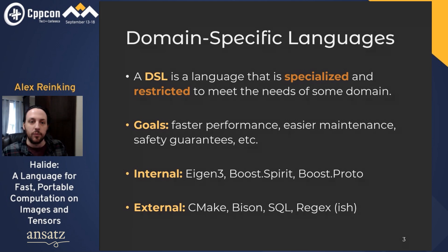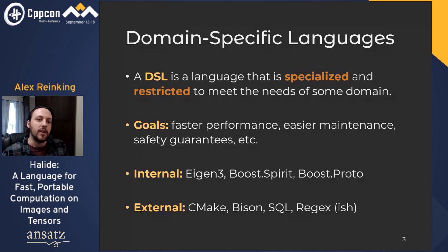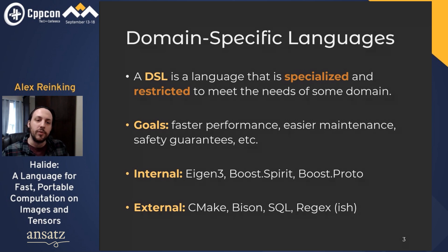It's nicer and more portable to write CMake than raw shell scripts and batch files. It's also more efficient to use a well-engineered parser generator than to read textbooks and write parsing tables yourself. In the programming languages world, we draw a distinction between internal DSLs that borrow the host language's syntax and toolchain, and external DSLs that supply their own. Examples include Eigen3 and Boost.Spirit as C++ internal DSLs, and CMake, Makefiles, Bison, SQL, and regular expressions as external DSLs.